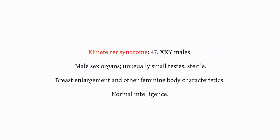The next trisomic disorder is Klinefelter syndrome. This occurs when there's an extra sex chromosome, giving a genotype of XXY. These are genetic males, so this is only a male disorder. They do have male sex organs, but those organs are usually small, with very small testes, and they are sterile — those testes do not produce sperm. Even though they have male sex organs, they experience feminization of their characteristics, including enlargement of the breasts especially during puberty, feminization of facial features, lack of body hair, and more rounded features. However, they do have normal intelligence.